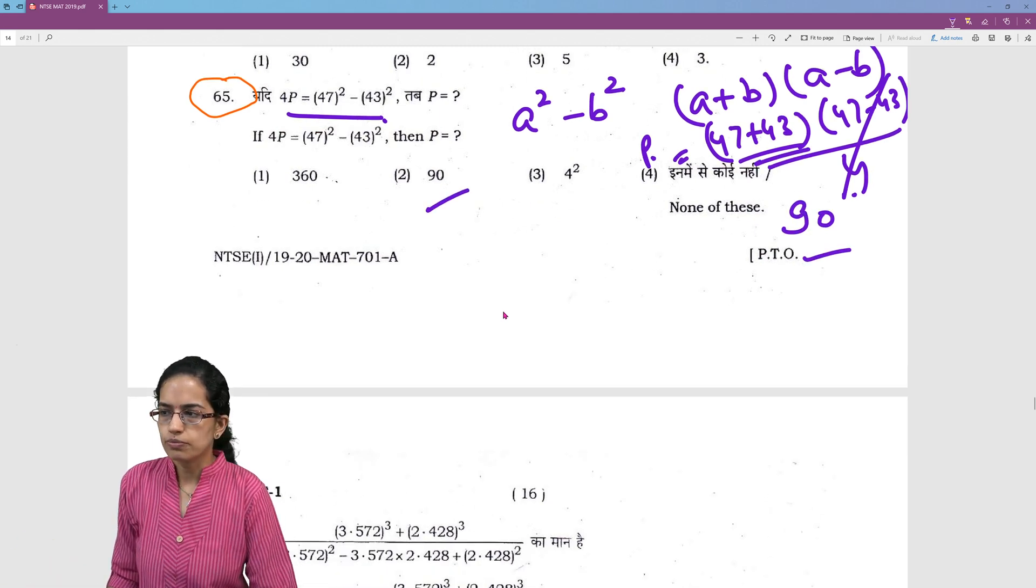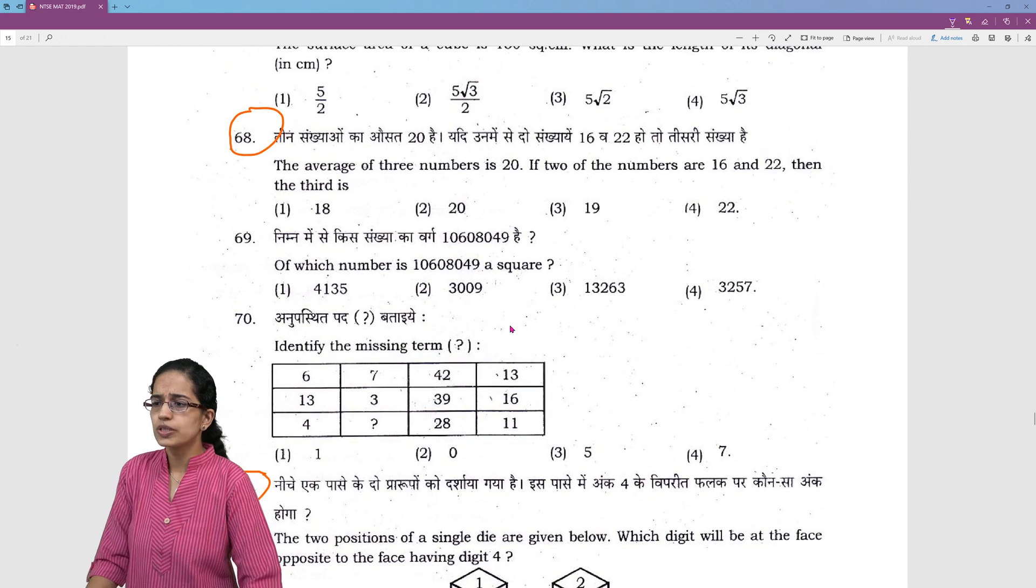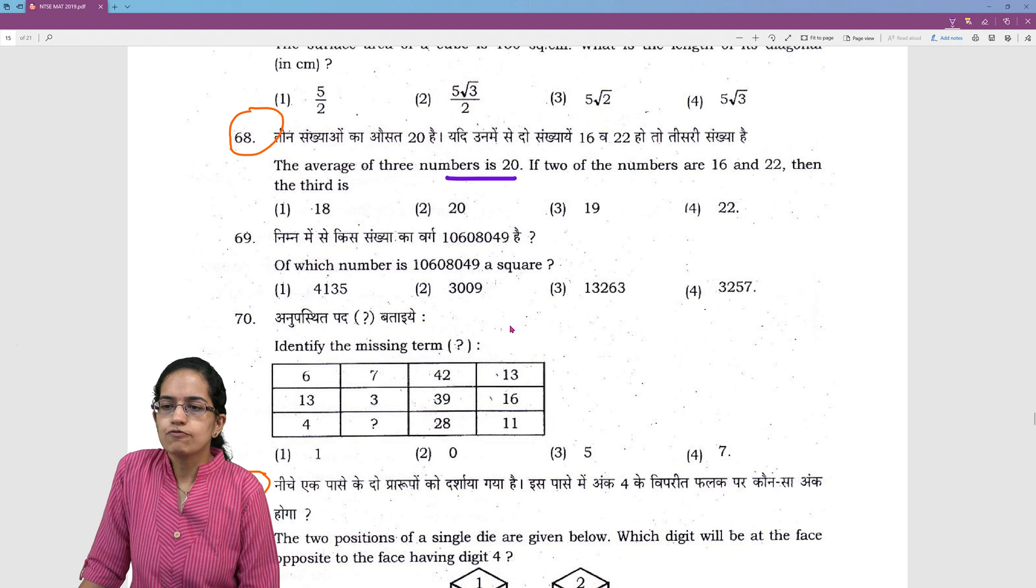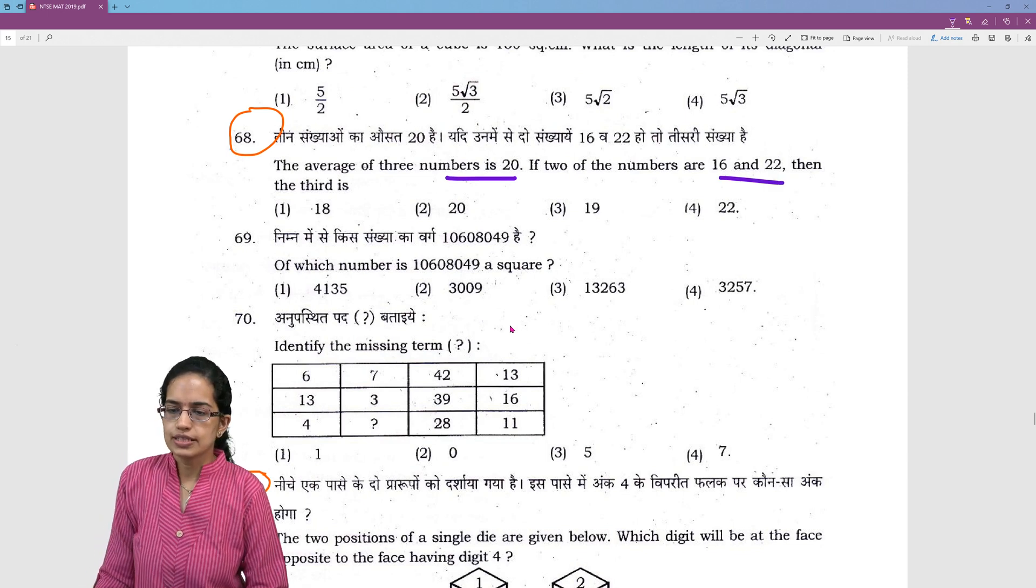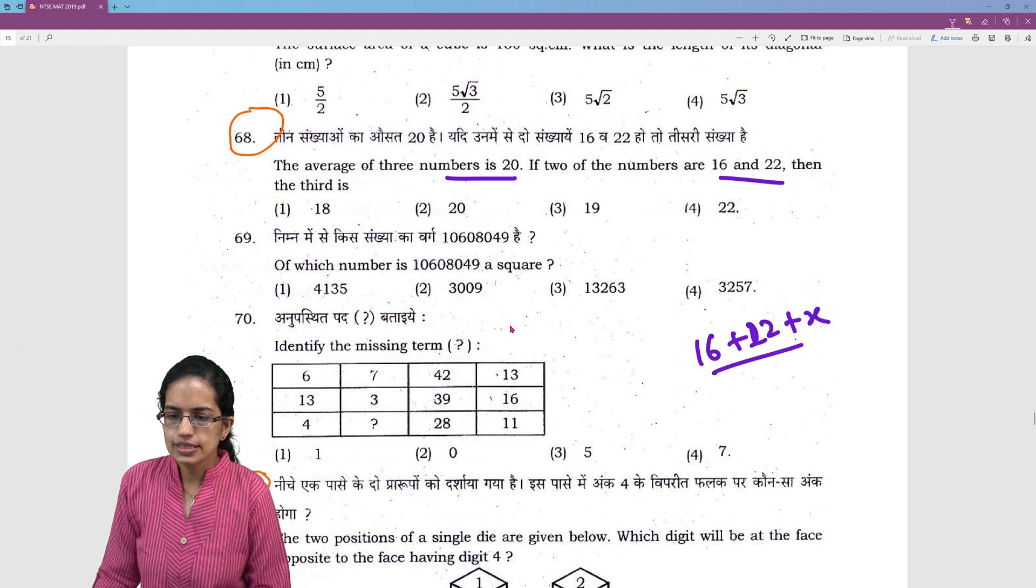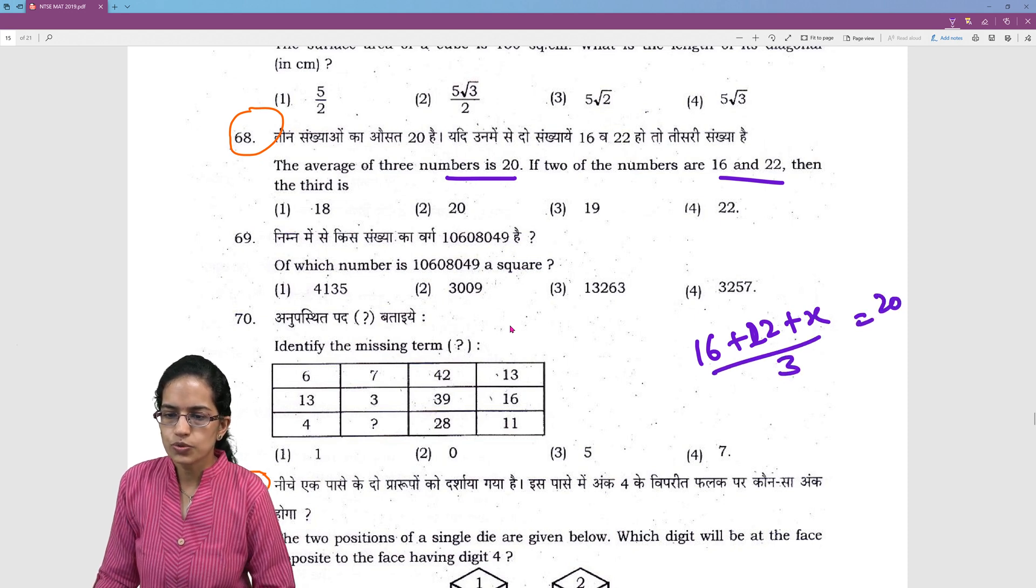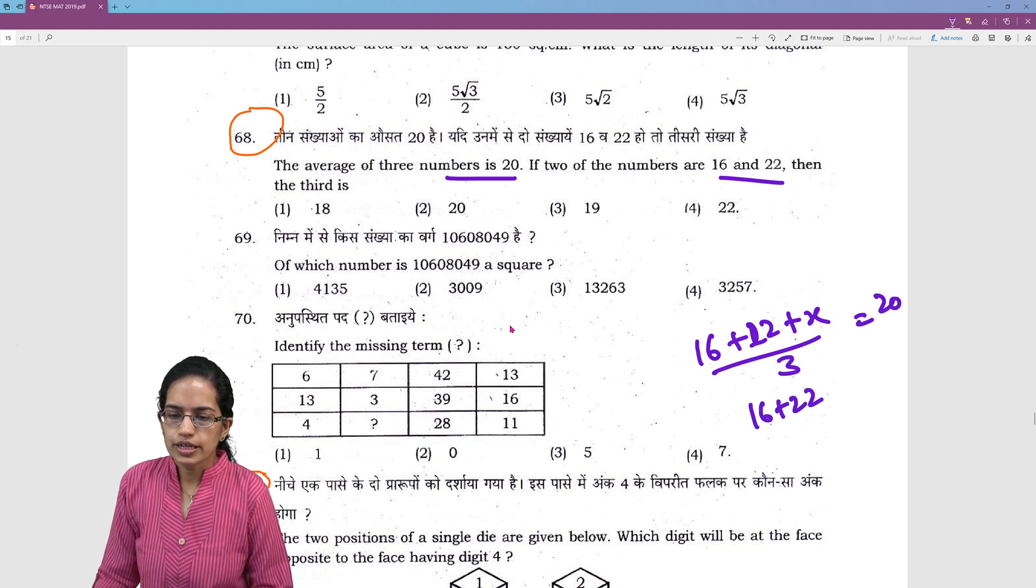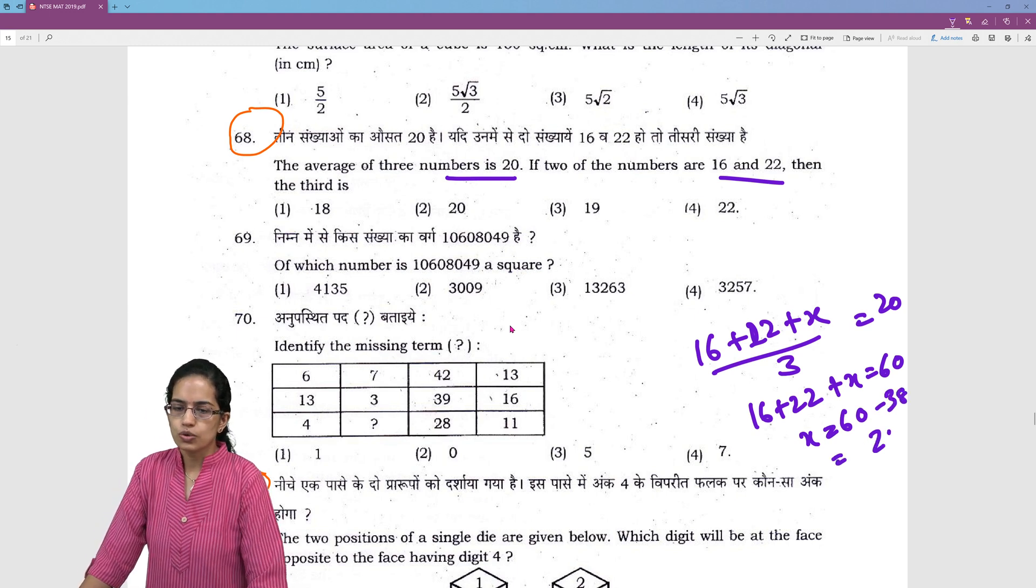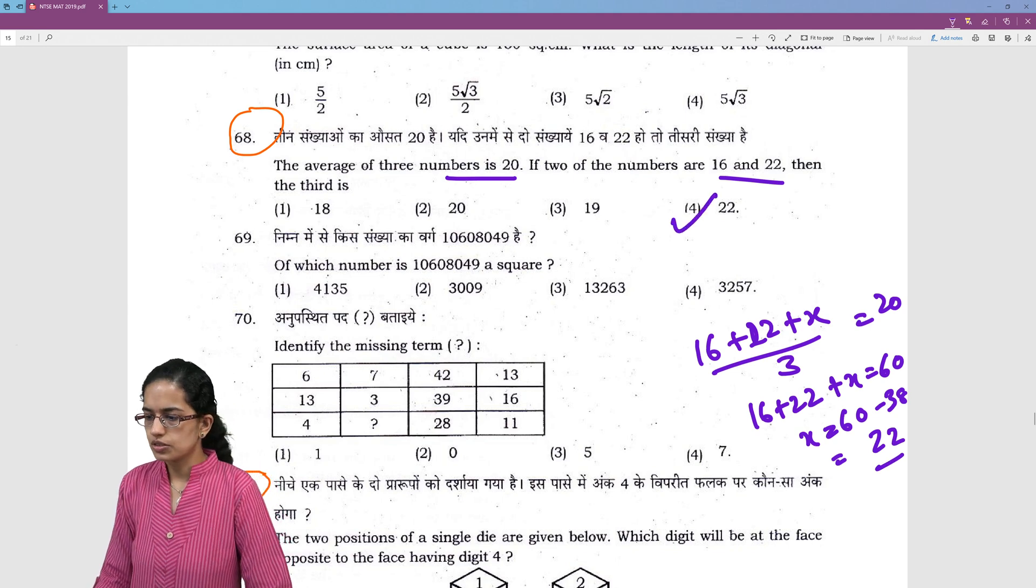So, 90 becomes the right option here. The next question is average of 3 numbers is 20. If 2 numbers are these, how do we find the 3 numbers? So, 16 plus 22 plus x divided by 3 is equal to 20. So, 16 plus 22 plus x is equal to 60. This is 38. So, x is equal to 60 minus 38 and you solve it. So, you would have 22 as the right option in this question.